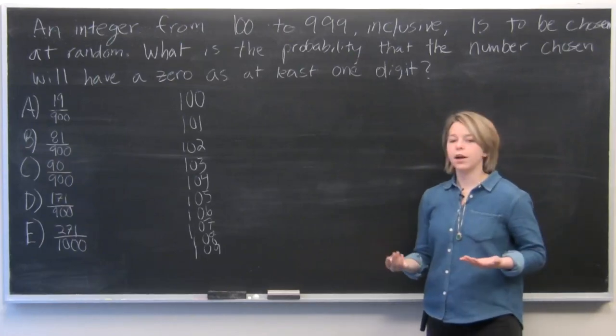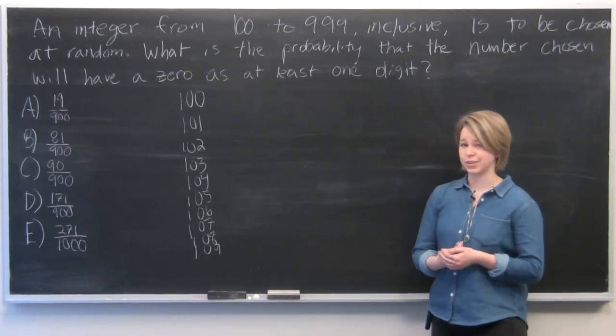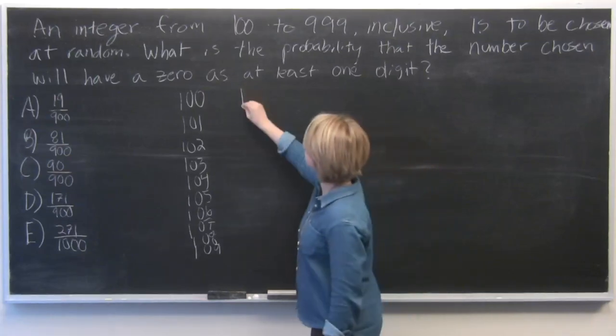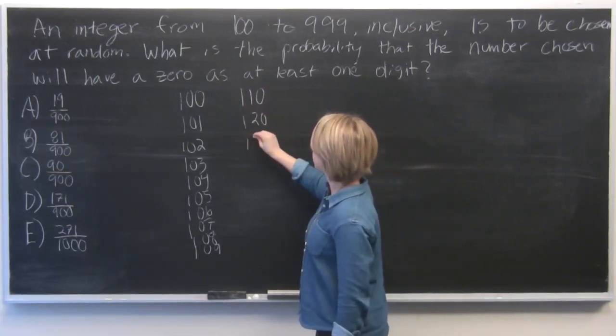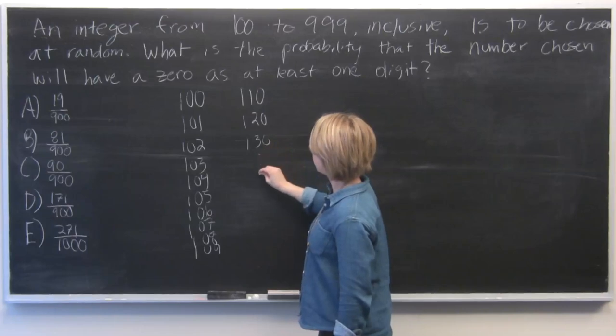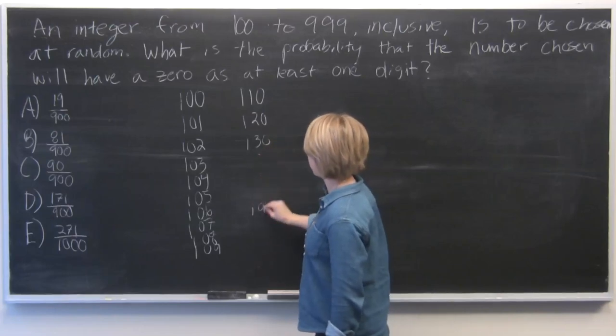And what other numbers are going to have a zero as one of the digits? We've got 110, 120, 130, all the way through 190.